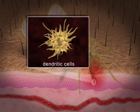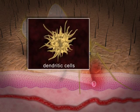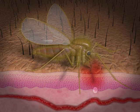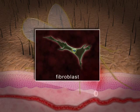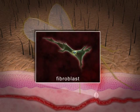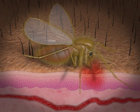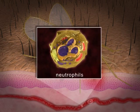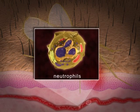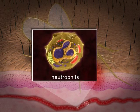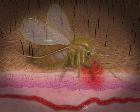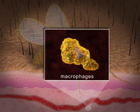The cell types invaded include dendritic cells, fibroblasts, neutrophils that are rapidly recruited to the bite site, and mainly the macrophages.